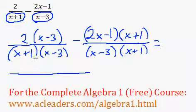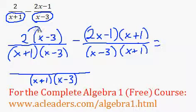At this point, I can just write the denominator down below once. And over here, we can just expand everything. So 2 times x is 2x, 2 times negative 3 is negative 6.